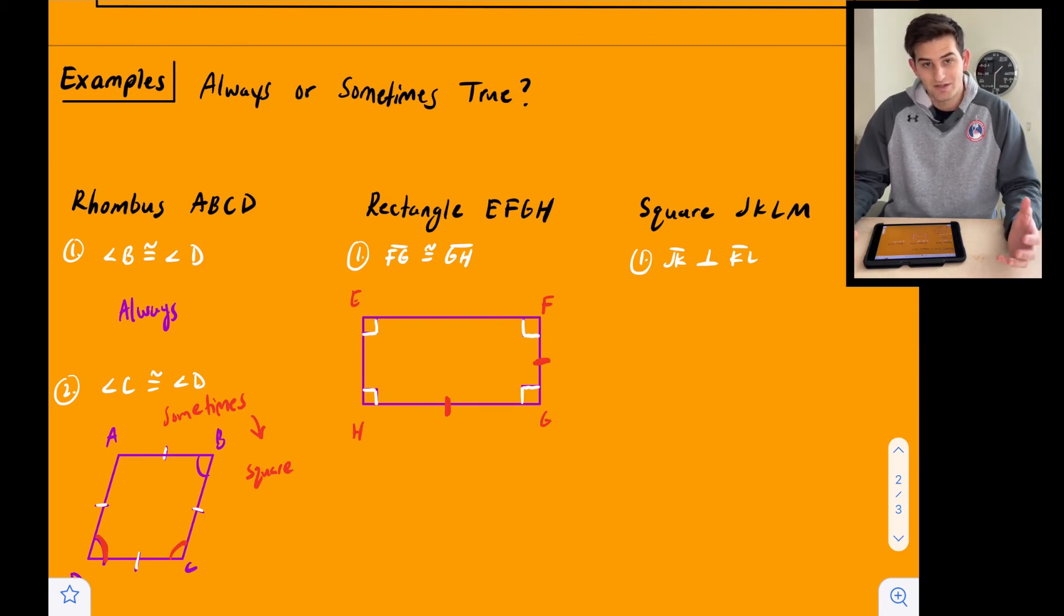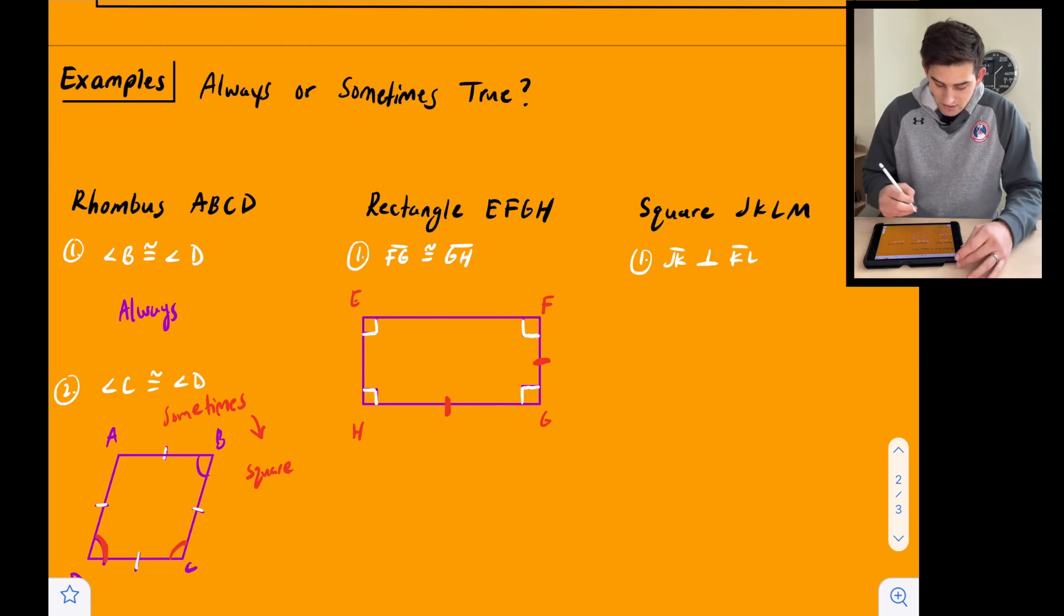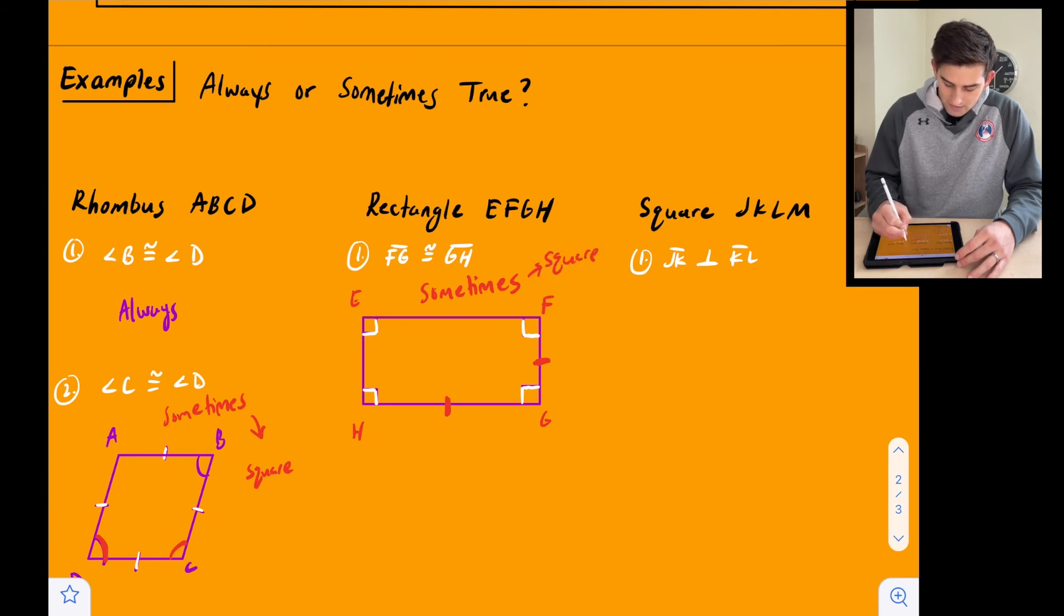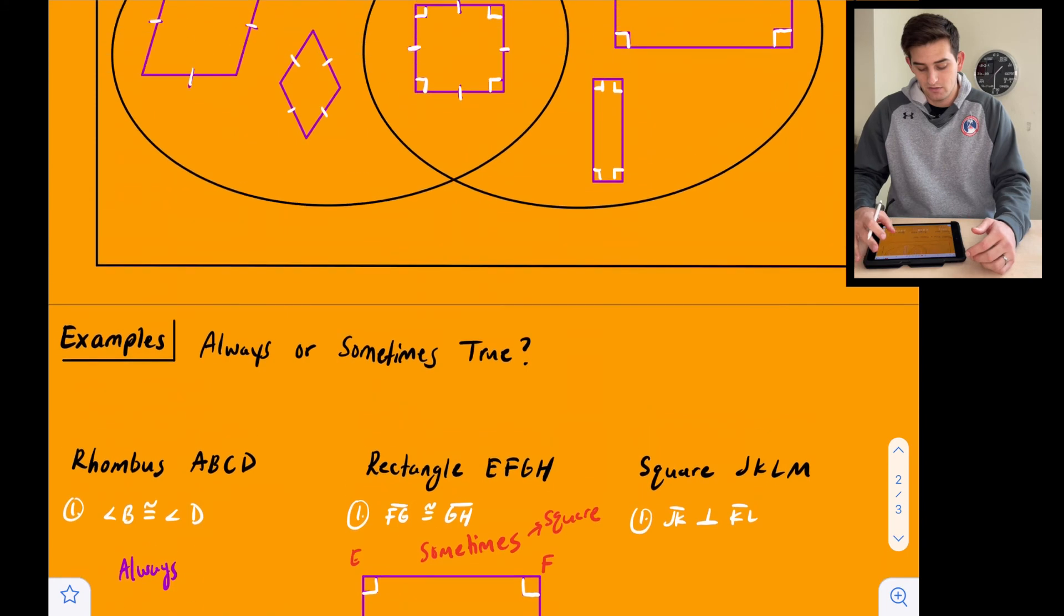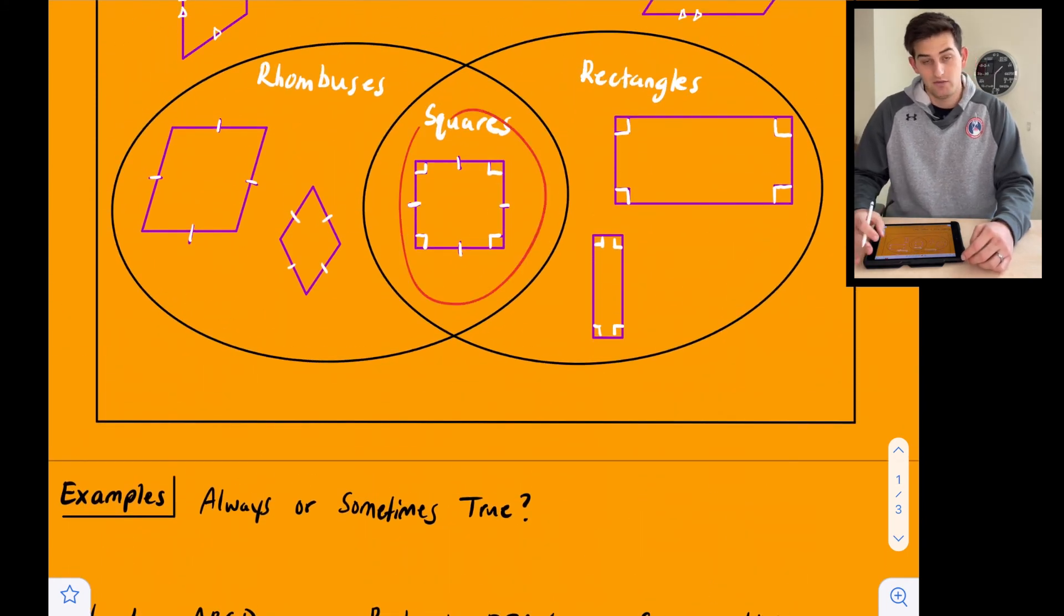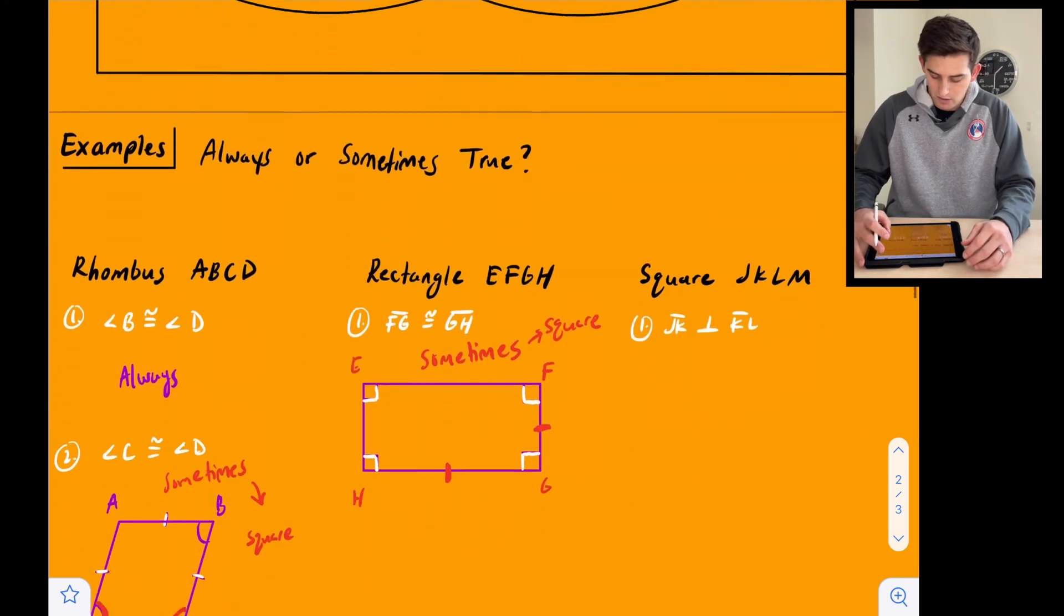But remember, a square is also a rectangle. So this could actually be sometimes true if once again, this is a square. Okay. Because remember a rectangle falls inside both of the rhombus and the rectangle oval. So it is actually one of each.